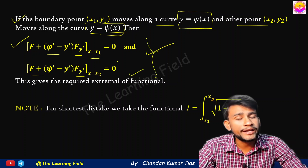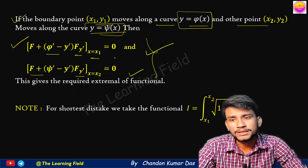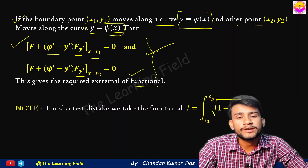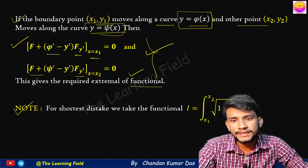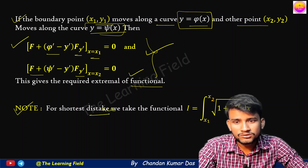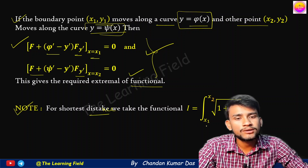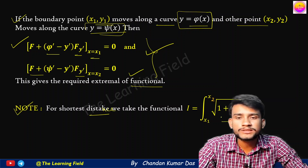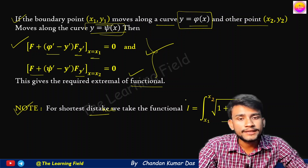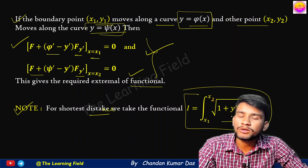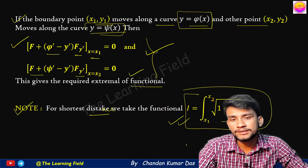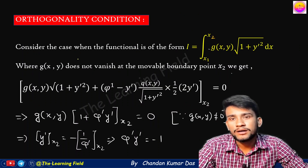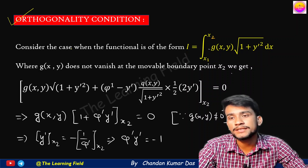Remember these formulas — they are very important for finding the shortest distance between any two curves in terms of a functional. One more important thing: in the case of shortest distance, we take the functional I equal to the integration from x1 to x2 of √(1 + y'²) dx. Sometimes the extremal is provided in the question, but sometimes you are simply asked to find the shortest distance between two curves, in which case we use this functional.